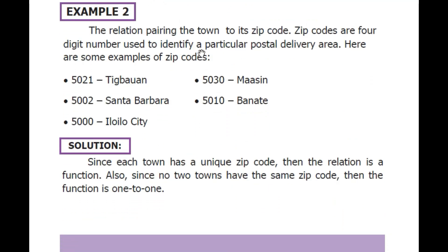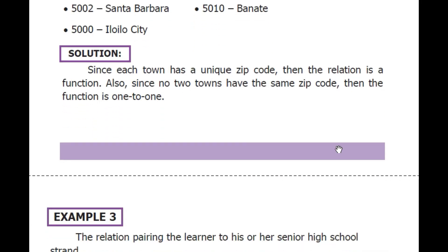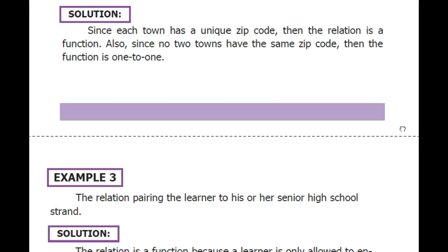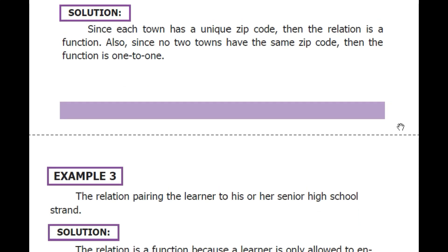Example 2: The relation pairing the town to its ZIP code. ZIP codes are four-digit numbers used to identify a particular postal delivery area. Since each town has a unique ZIP code, the relation is a function. Also, since no two towns have the same ZIP code, the function is one-to-one.